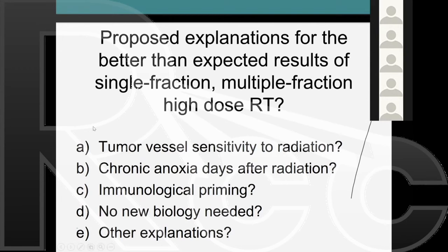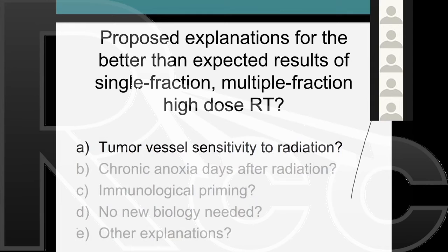Several explanations have been proposed based on animal studies: Are tumor vessels very sensitive to radiation? Does chronic anoxia occur days after radiation—if radiation kills oxygenated cells, does persistent low or zero oxygen then become cytotoxic? Is the immune system involved? And some say no new biology is needed at all—everything can be explained by the alpha-beta model. There may be other explanations too.